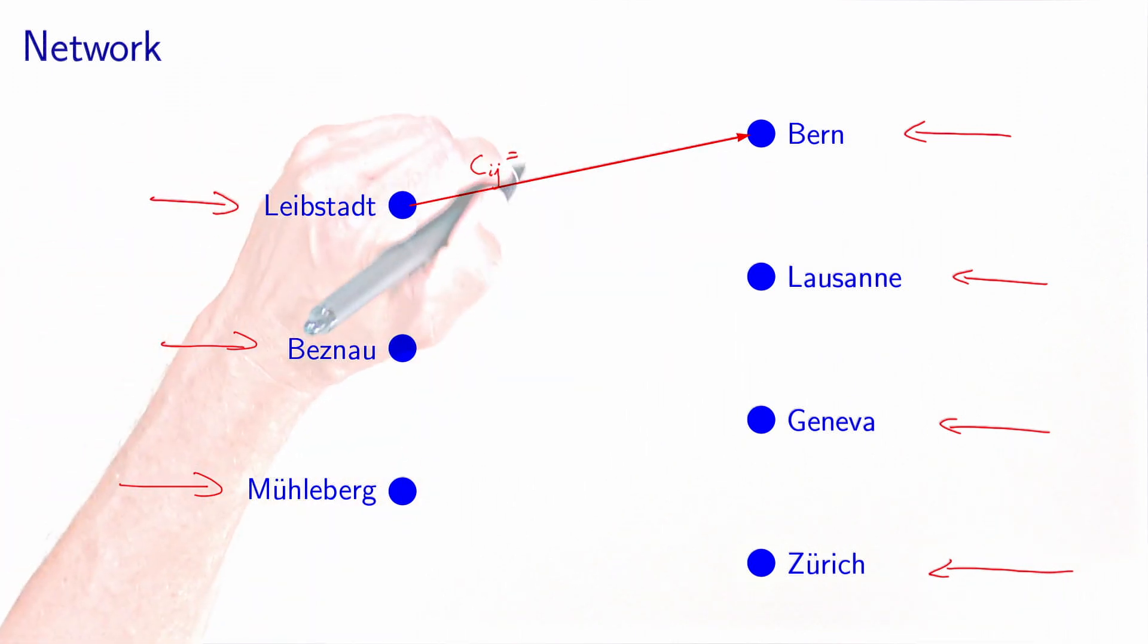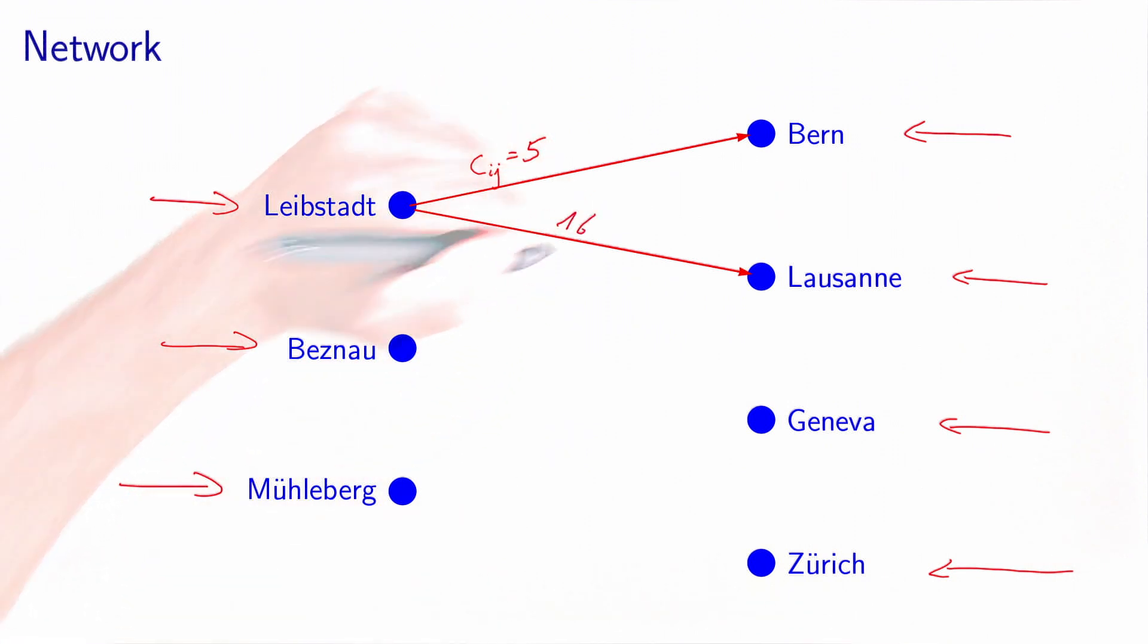In the case of Leibstadt-Bern, it was five. Then we do the same for Leibstadt-Lausanne. There is a possibility to serve Lausanne. And the cost here would be 16. And we continue like this to complete the network.